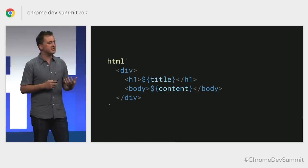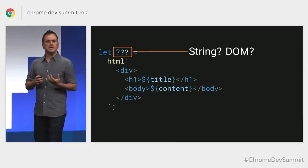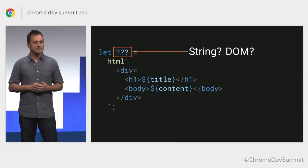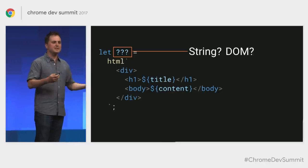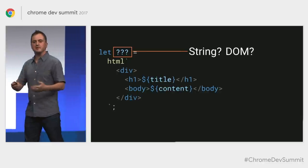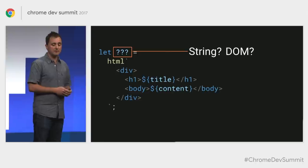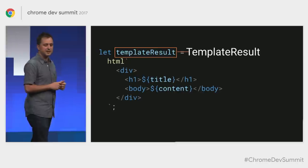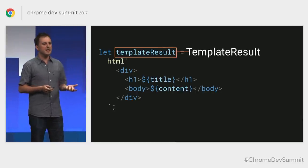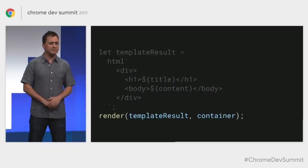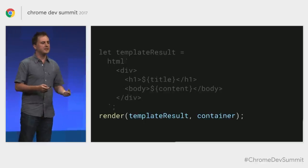Instead of returning a string or raw DOM — which would require blowing away all DOM on each render — Lit HTML returns something called a template result. A template result is an object containing a reference to the template we want to render and the data to render it with. It's the instructions for how to render some DOM, not the DOM itself. To actually render the template result, you pass it to the HTML render function and give it a DOM container. The first time, it renders the complete template; after that, it just updates what's already there.